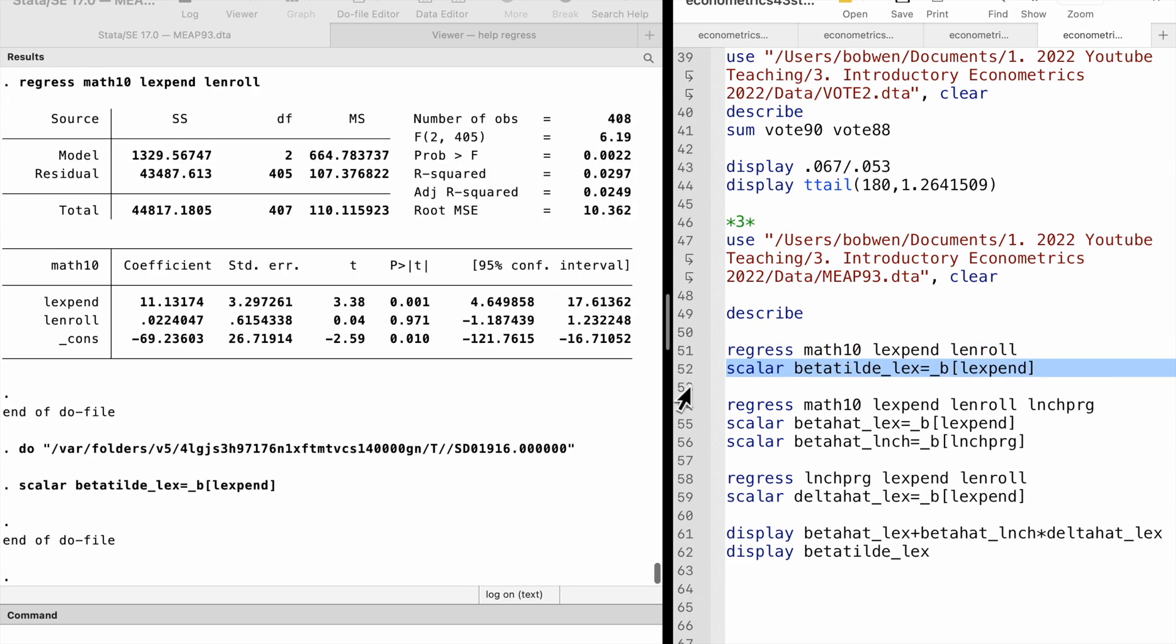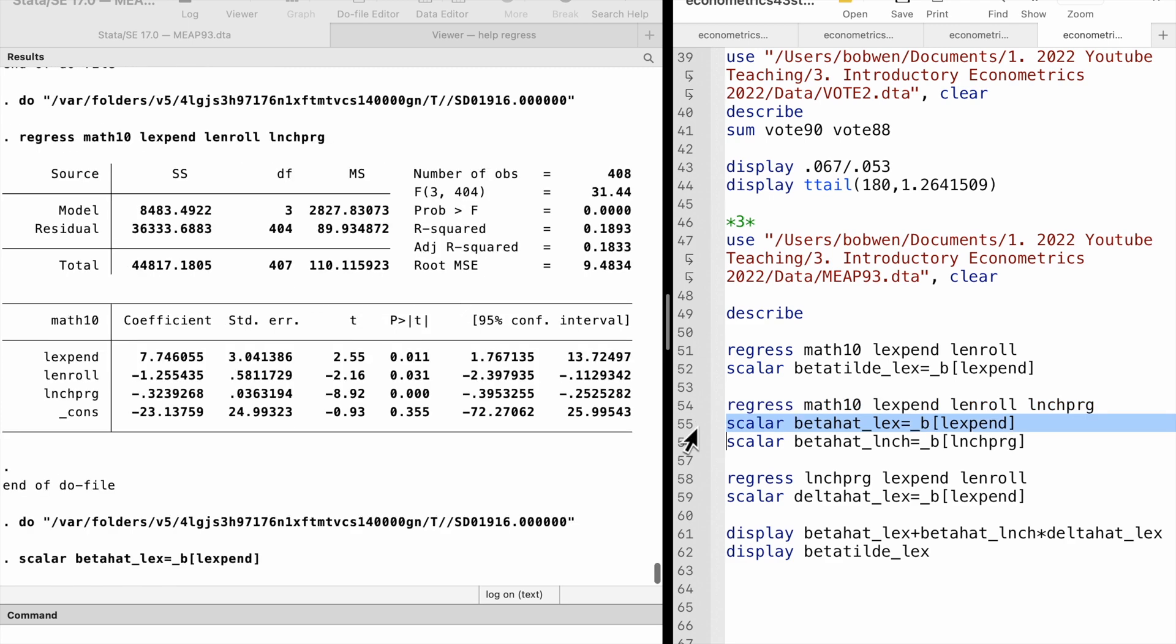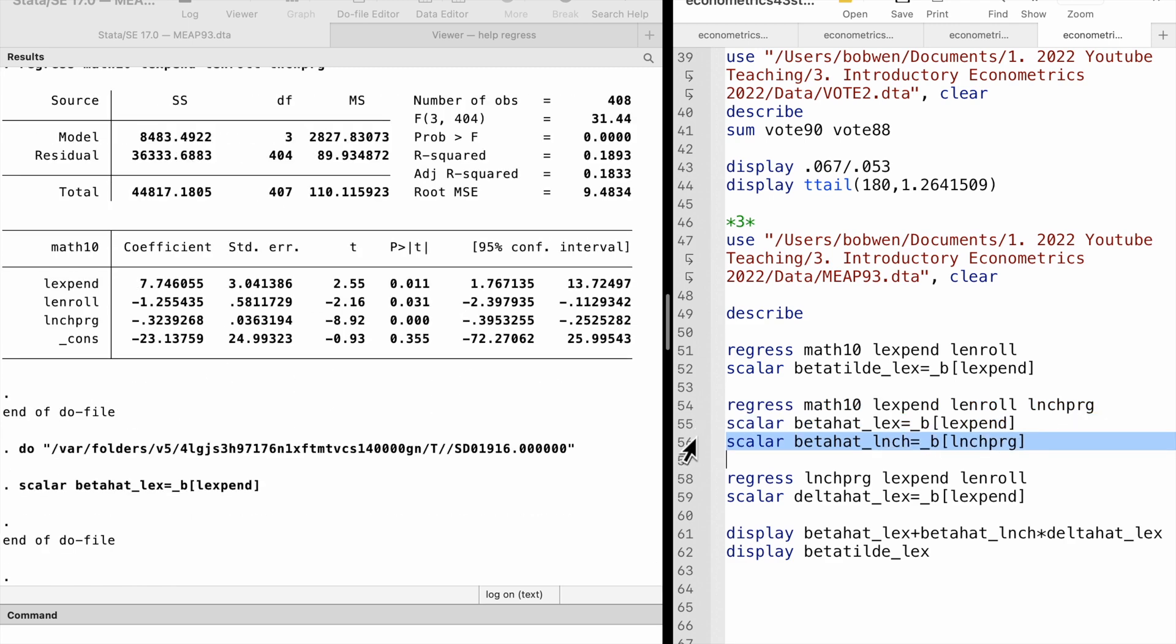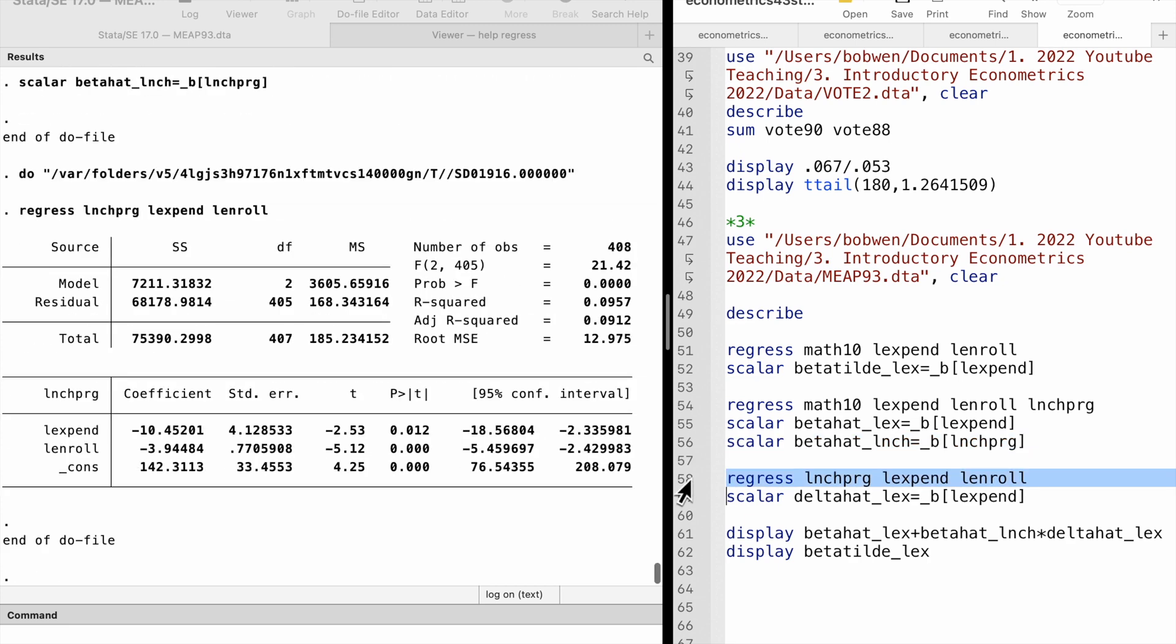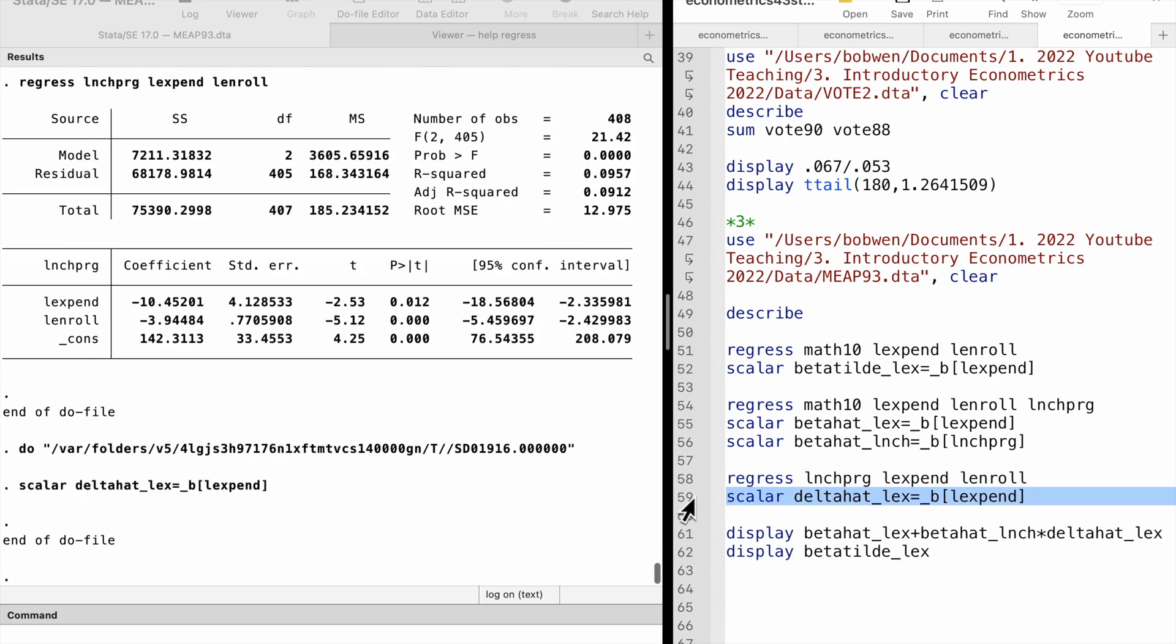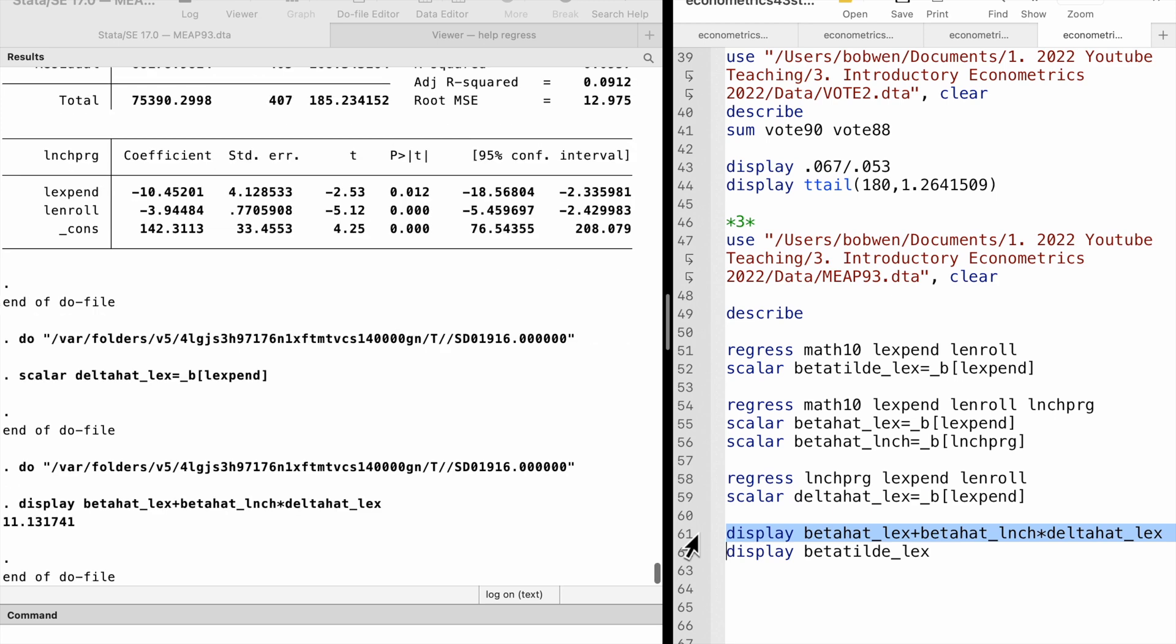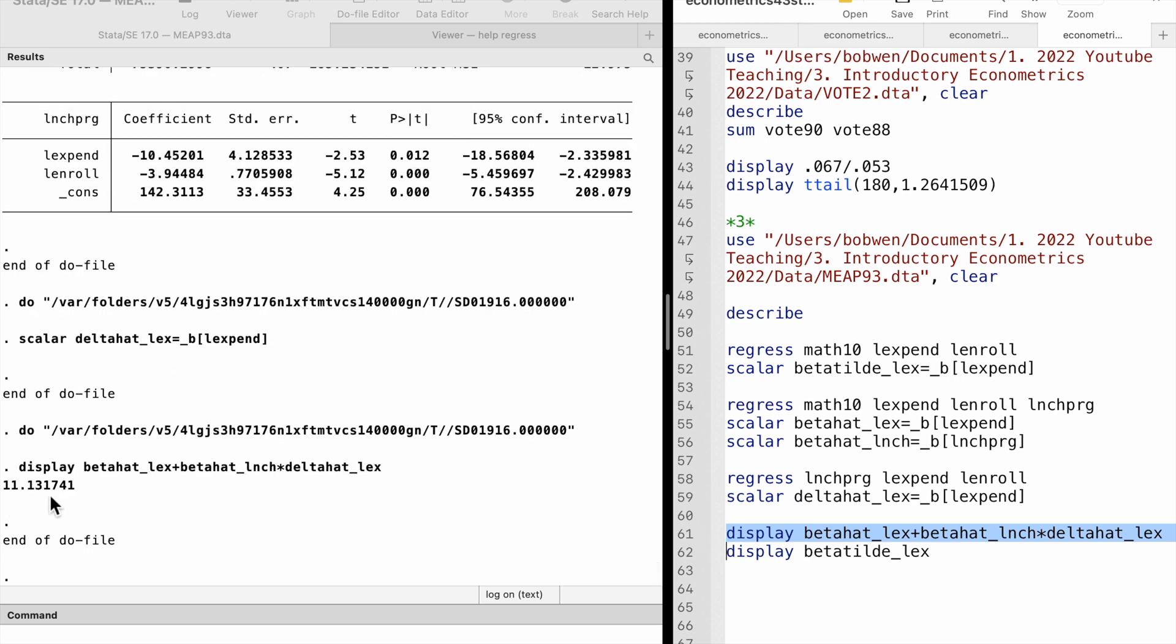We first estimate the model without the lunch program variable, model 1, and obtain beta 1 tilde. Second, we estimate the model with the lunch program variable, model 2, and obtain beta 1 hat and beta 2 hat. Third, we run the auxiliary regression of the lunch program on the other two explanatory variables and obtain delta 1 hat. Finally, we verify that the omitted variable bias formula holds.